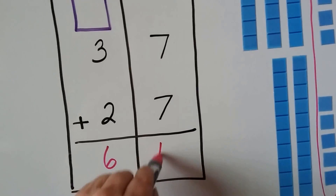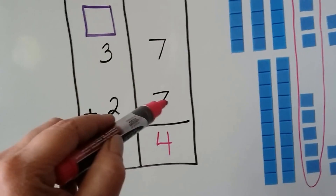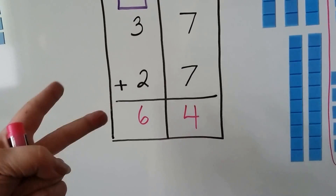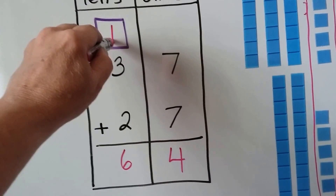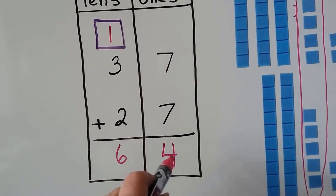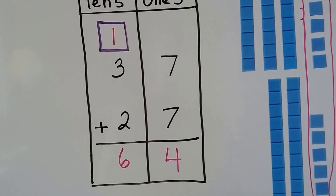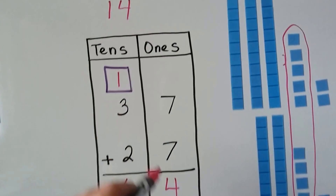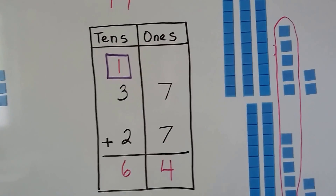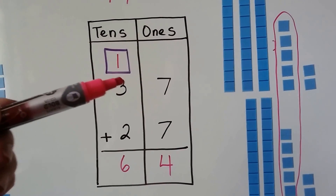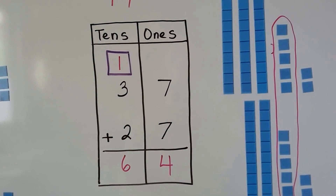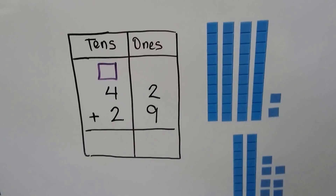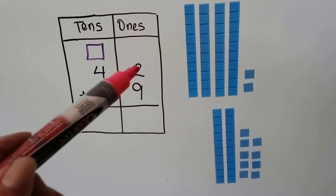Six tens and four ones. Seven plus seven is seven, eight, nine, ten, eleven, twelve, thirteen, fourteen. We put the one from the fourteen up here and the four from the fourteen down here. Fourteen is one ten and four ones — we put the one in the tens place and the four in the ones place. That gives us one, two, three, four, five, six tens. We regrouped.